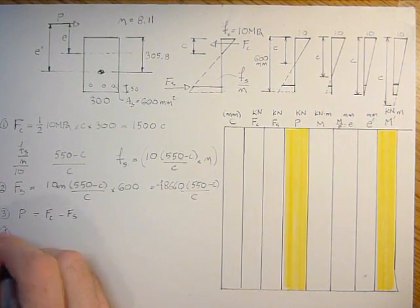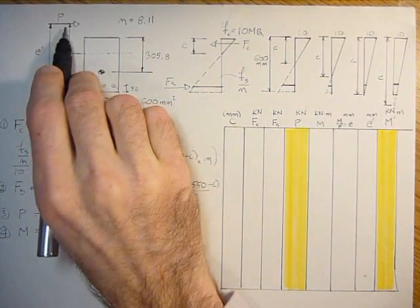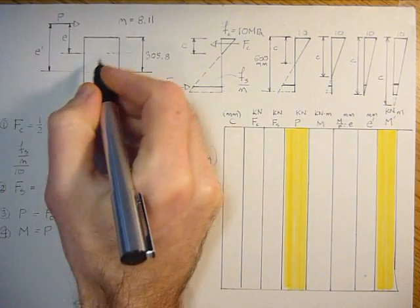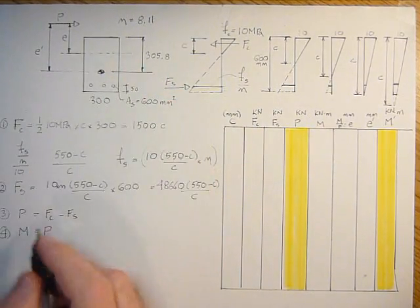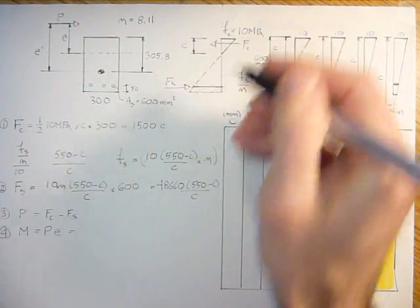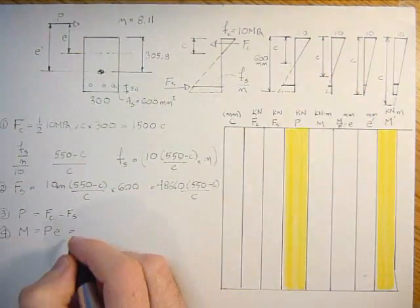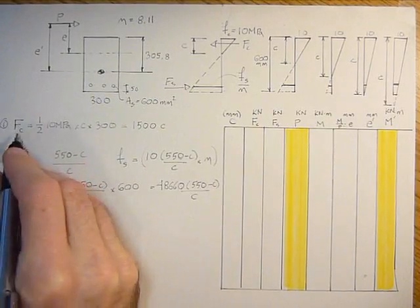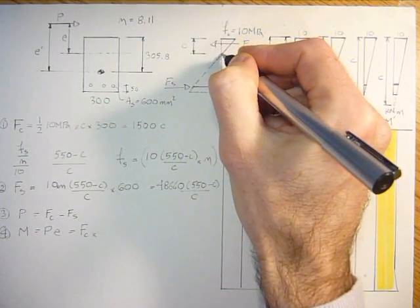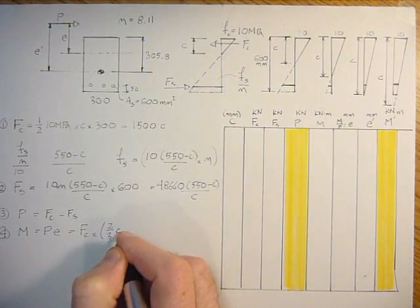And then we can now calculate equation four, which is the moment. For the externally applied moment, it's due to P times E. We're taking moments about the floating neutral axis here. So P times E. And on the other side of the equation, the internal forces, we got the force in the concrete times the centroidal distance of this stress distribution to the neutral axis, which is two-thirds C.